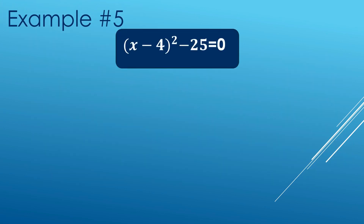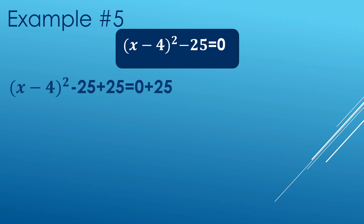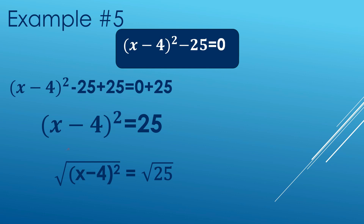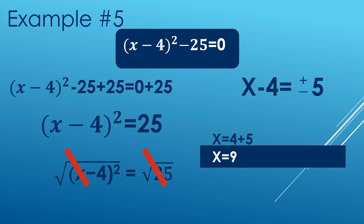Now for the last example: find the solutions of the equation (x minus 4) squared minus 25 equals zero. First, notice it is not in standard form, so we apply the Addition Property of Equality — adding positive 25 to both sides — giving (x minus 4) squared equals 25. Taking the square root of both sides, x minus 4 equals plus or minus 5. Transferring negative 4: x equals 4 plus 5, so x equals 9; and x equals negative 5 plus 4, so x equals negative 1.